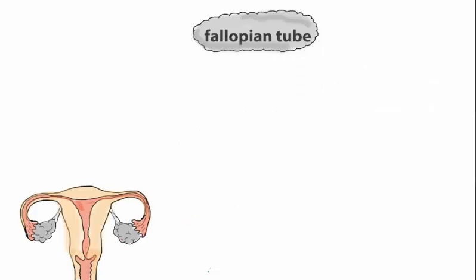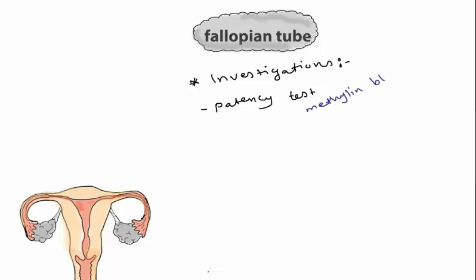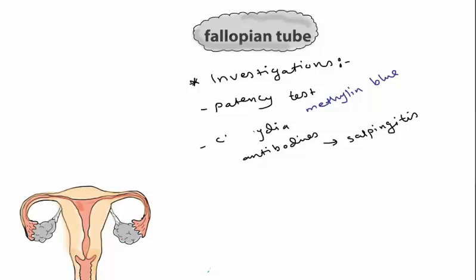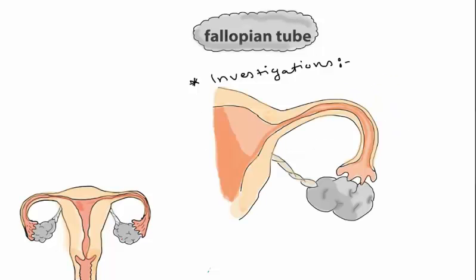Investigations to consider when suspecting disease of the fallopian tube include a patency test, which checks for obstruction in the lumen, and chlamydia antibody testing, since chlamydia is a common cause of salpingitis. You can also check for pelvic inflammatory disease.